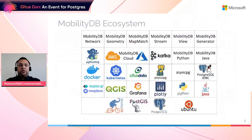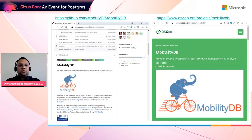Because MobilityDB is an extension for Postgres, it works well with the Postgres ecosystem. We have tested all the tools included in this slide, and during this talk we will see how it integrates with Citus to support distributed spatial temporal queries. MobilityDB is an open source project available on GitHub, and it is also a community project in the Open Source Geospatial Foundation, OSGeo.